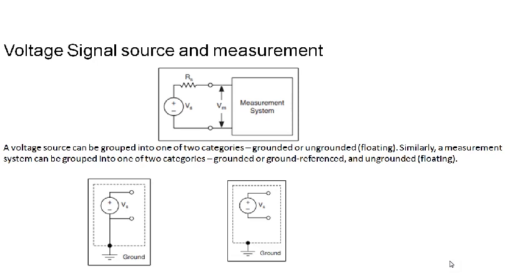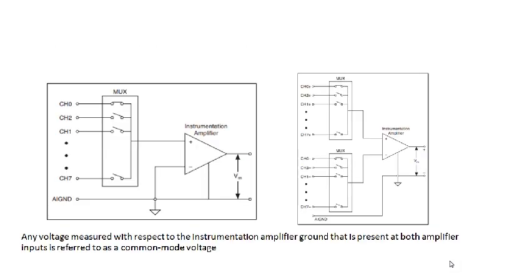Looking at the voltage source and measurement system: the voltage source can be a grounded signal or a differential signal. The measurement system can be single-ended, meaning the signal is measured with respect to ground by the amplifier, or differential, meaning the signal is measured with respect to two wires — that is, a differential signal is measured.